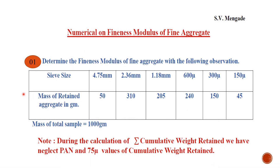Question 1 is on Fineness Modulus of Fine Aggregate. The Fine Aggregate sieve size range is between 4.75 mm to 75 micron. But for calculating the Cumulative Weight Retain, you have to neglect the Pan and 75 micron sieve Cumulative Weight Retain. In the question, the sieve size range is given from 4.75 mm to 150 micron.